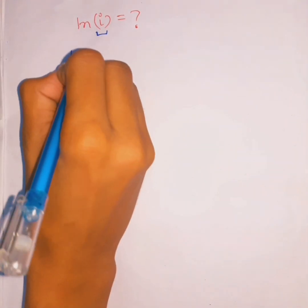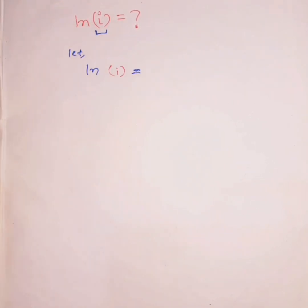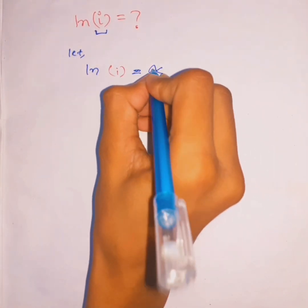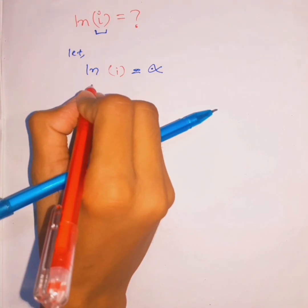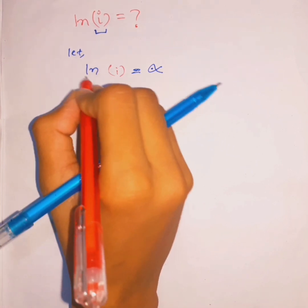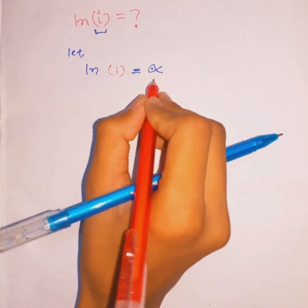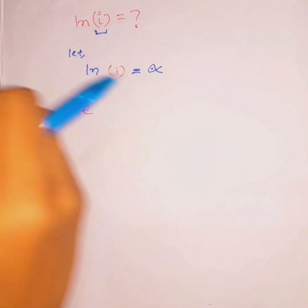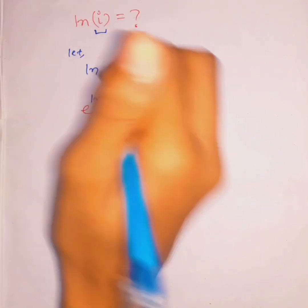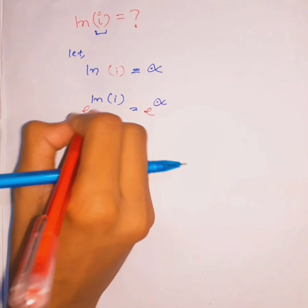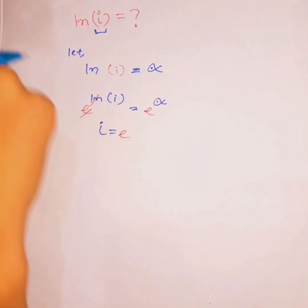Suppose ln(i) equals something — let's call it 'fish.' We need to find the value of fish. First, we isolate i by taking e as the base on both sides, so e^(ln(i)) equals e^(fish). Here e and ln cancel out, giving us i equals e^(fish).